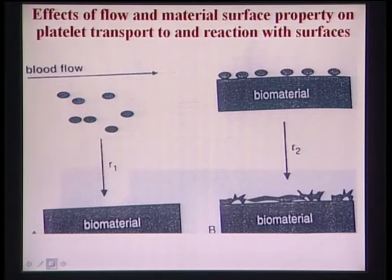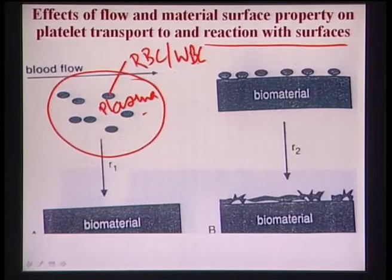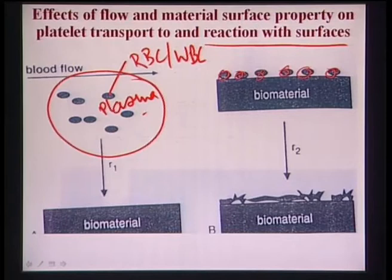The blood flow can be considered as plasma containing leukocytes, RBCs, and WBCs. Initially, proteins will be adsorbed on the material surface first, and then blood cells will adhere. They can spread on the surface just as fibroblast or osteoblast cells spread on surfaces.